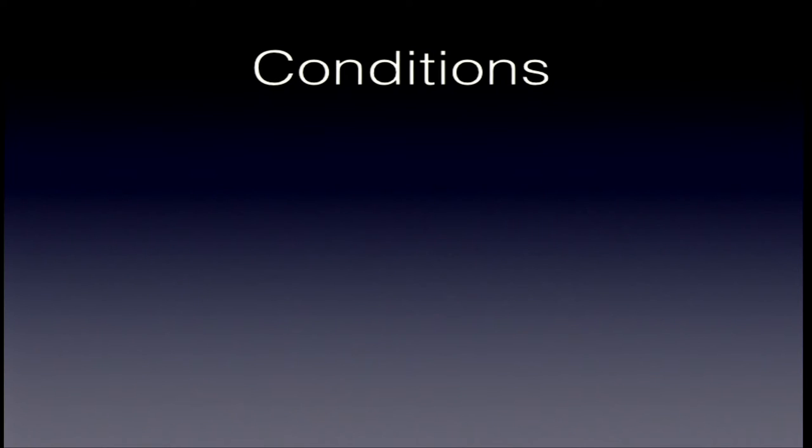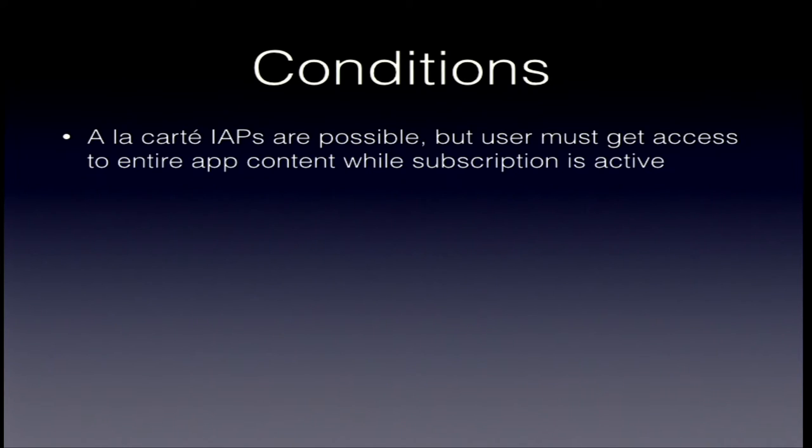There are some conditions Apple imposes when you want to do auto-renewable subscriptions. You can do so-called à la carte in-app purchases — where users pick certain functionalities — but if you do a subscription, you have to completely replace that. The user must get everything: either all-you-can-eat for one price, or à la carte — but you cannot mix them. You cannot charge once for a purchase and then also charge for a subscription.